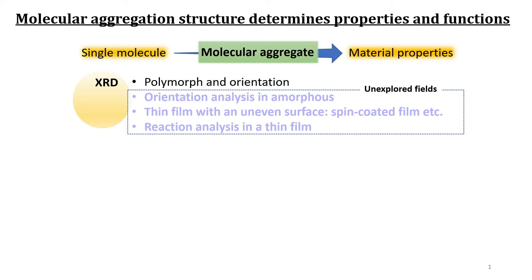The aggregation structure is often analyzed by the X-ray diffraction technique, which powerfully reveals polymorph and their orientations, but it misses amorphous parts.